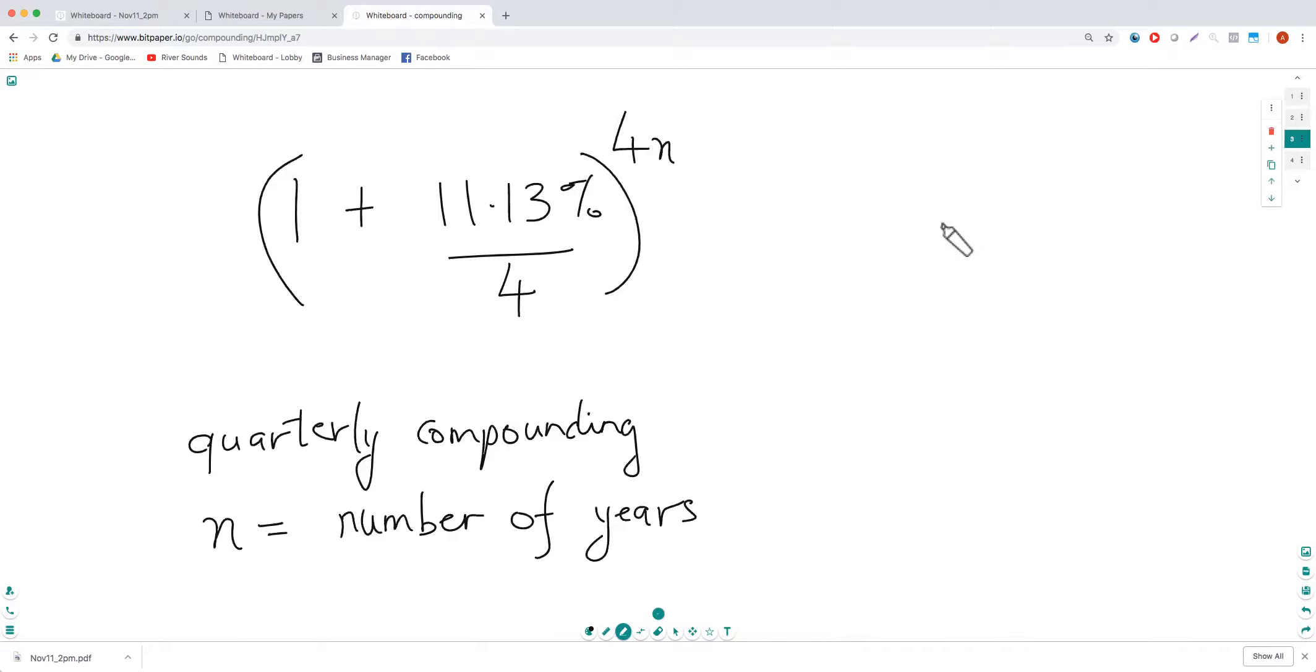If it were semi-annual, that would mean it compounds two times a year, then you would use 1 plus r by 2 power 2n. And if it were k times a year, compounded k times a year,